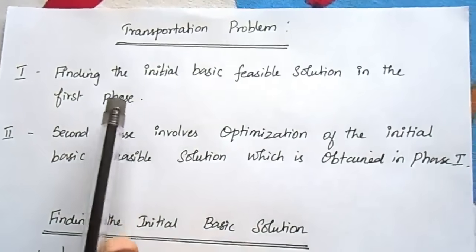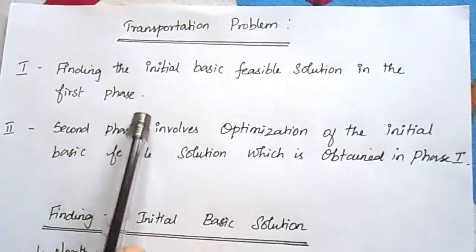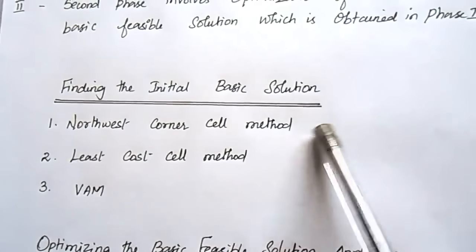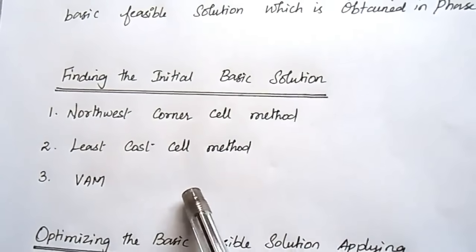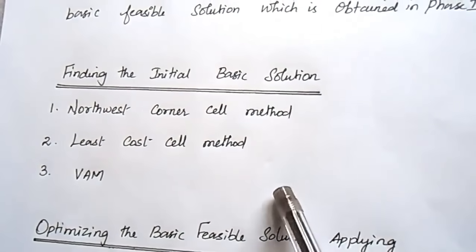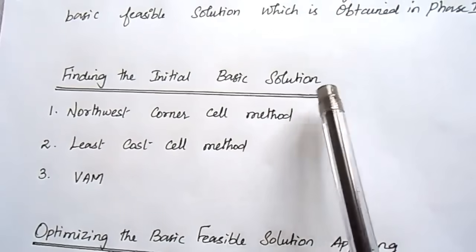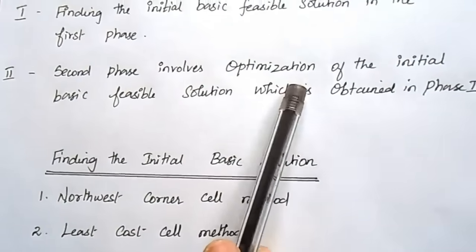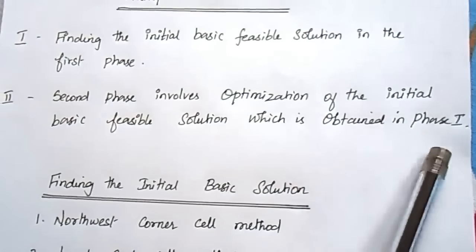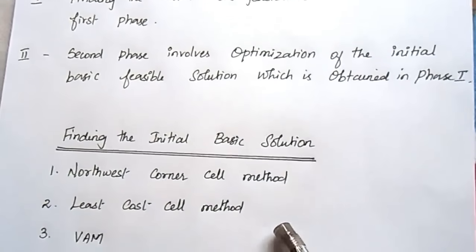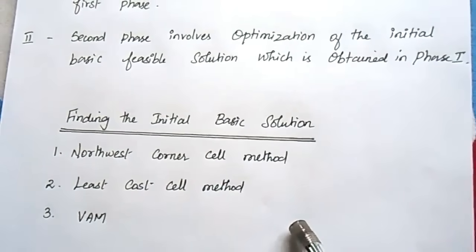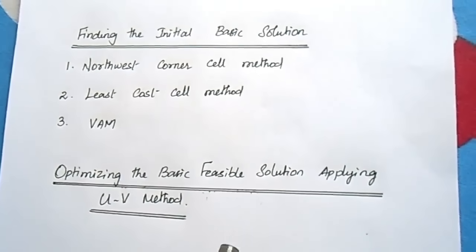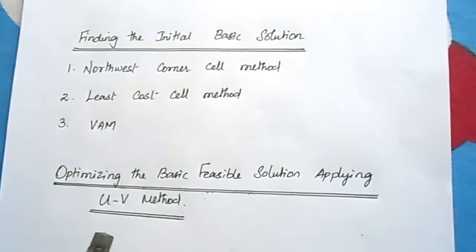It has two phases. The first phase is finding the initial basic feasible solution. There are three methods available: the Northwest corner cell method, the least cost method, and Vogel's approximation method (VAM). The second phase involves optimization of the initial basic feasible solution obtained in phase one. Optimality can be obtained by using the UV method.